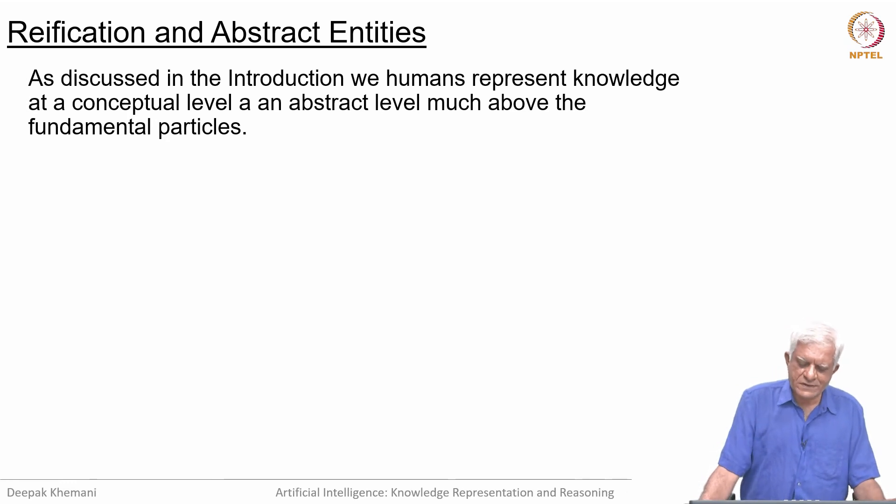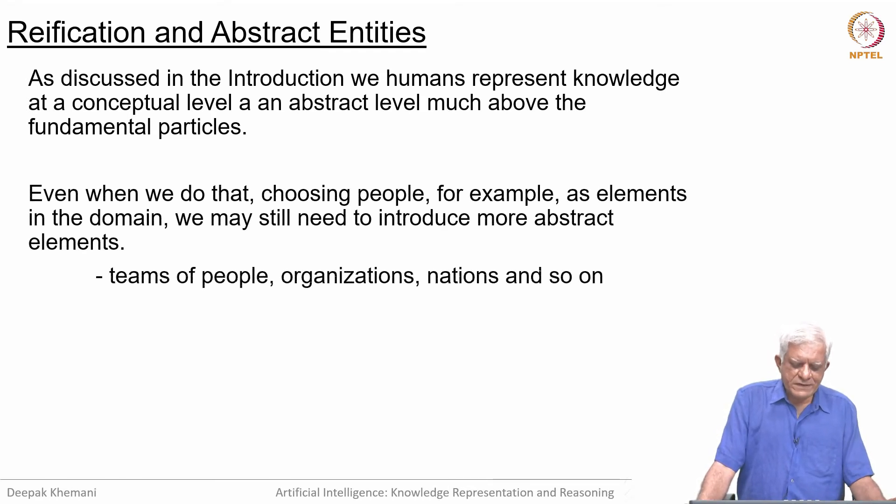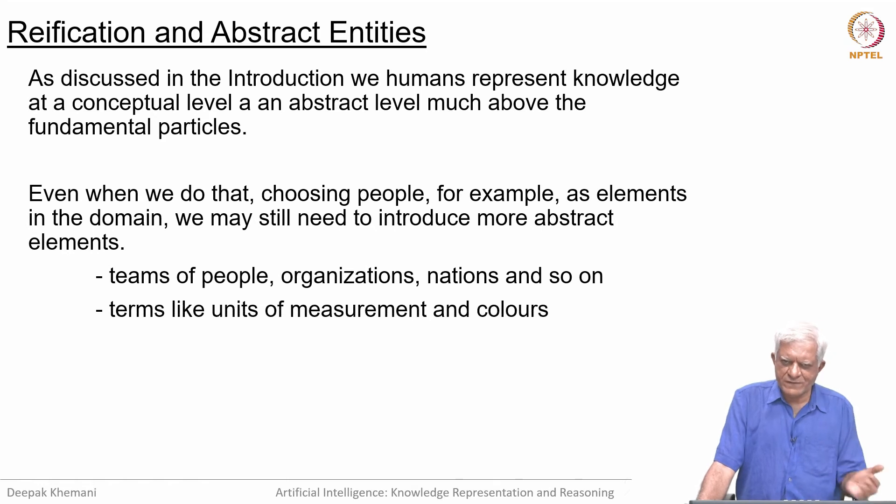As discussed in the introduction, we humans represent knowledge at a conceptual level, which is at an abstract level much above the fundamental particles the world is really made up of. Even when we do that, choosing people as our level of representation, we may still need to introduce more abstract elements, for example teams of people, organizations, nations and so on.